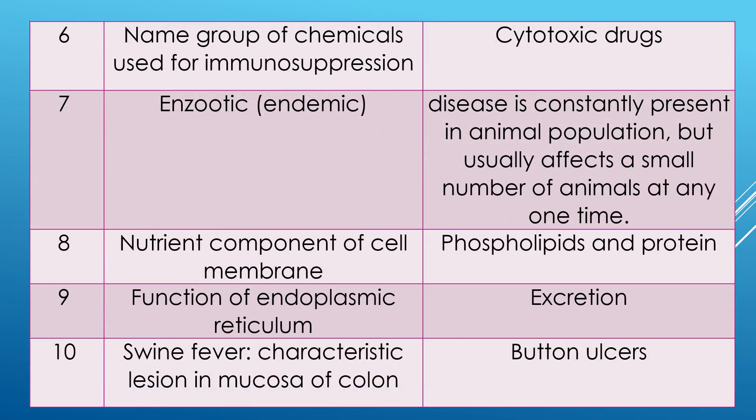Question 6: name the group of chemicals used for immunosuppression. Answer is cytotoxic drugs, which are used for immunosuppression purpose to suppress the immunity.